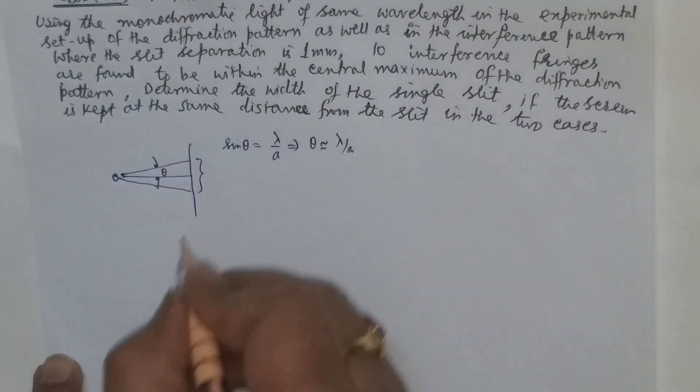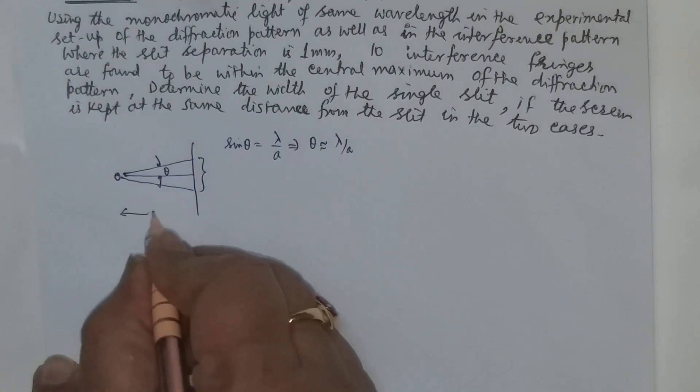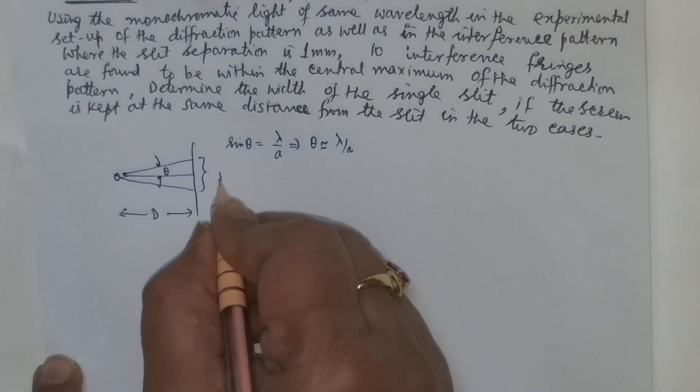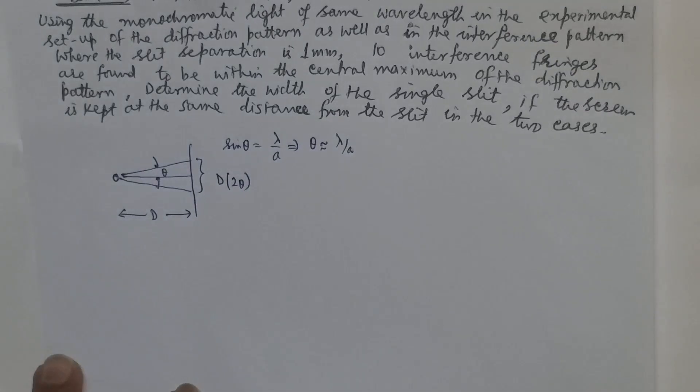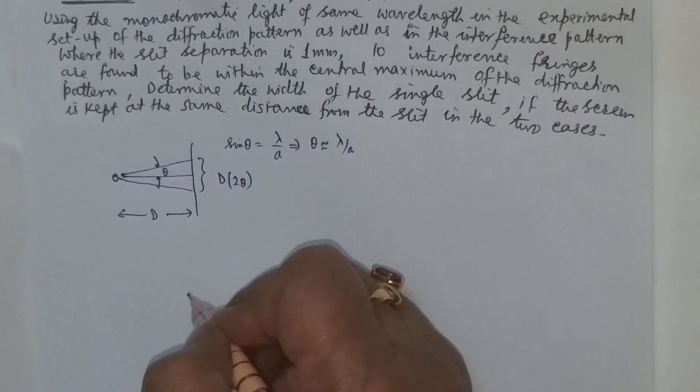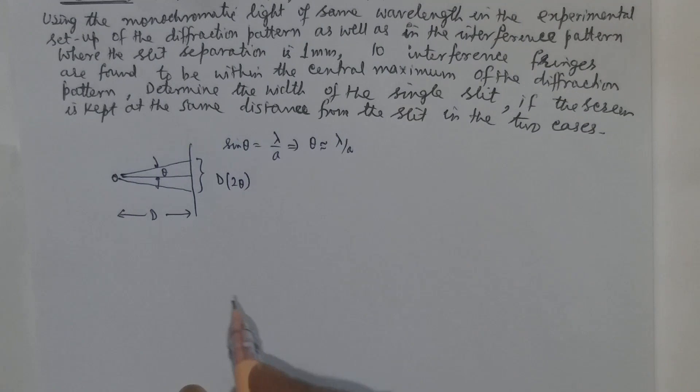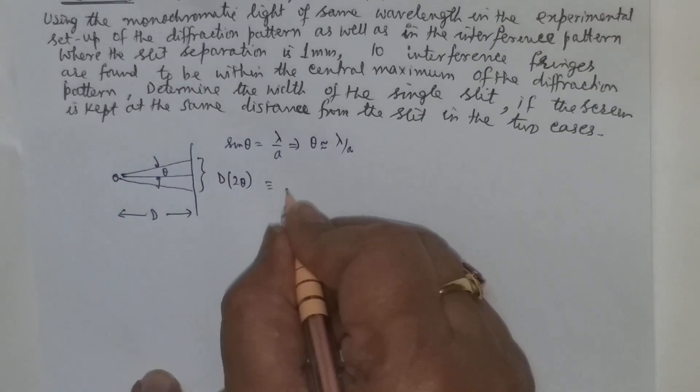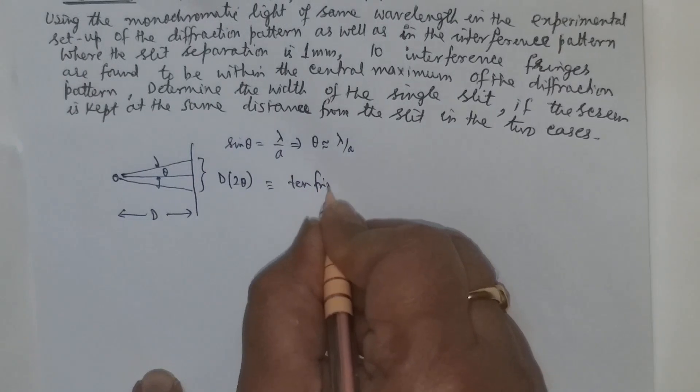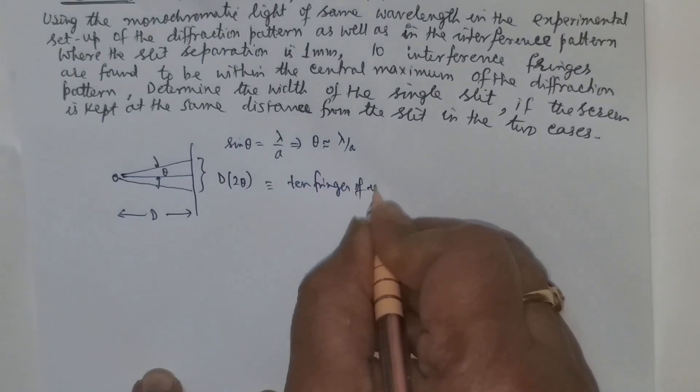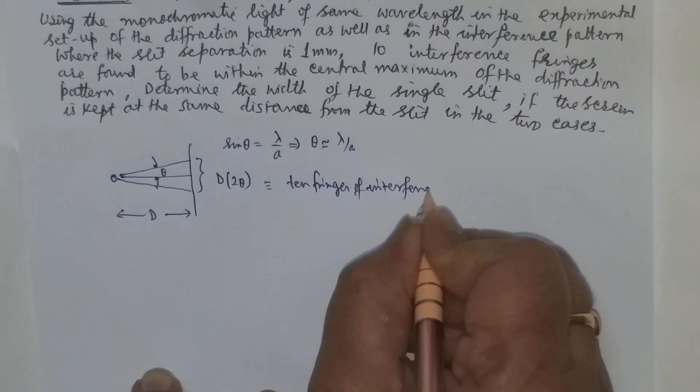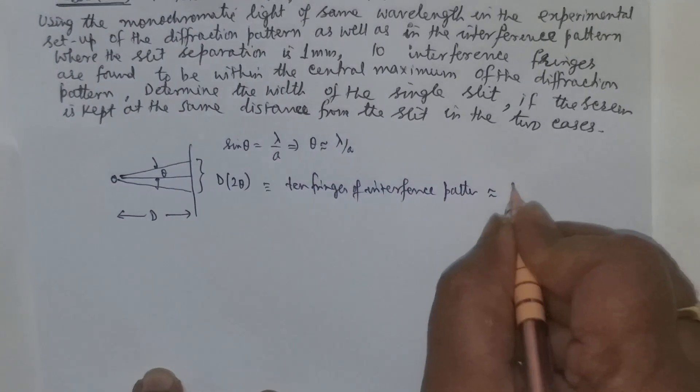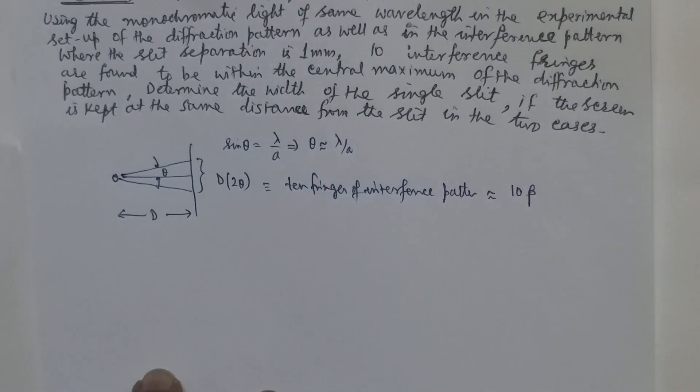This distance will be d times 2 theta. Now this d times 2 theta is the width of the central maximum and as per the question within this there will be 10 fringes of interference pattern, which is almost equal to 10 times beta.